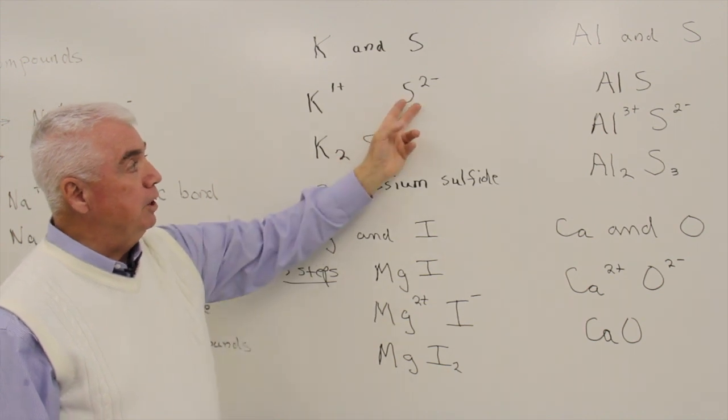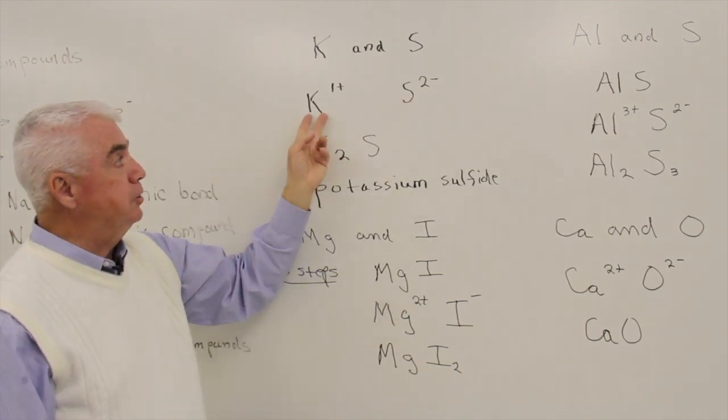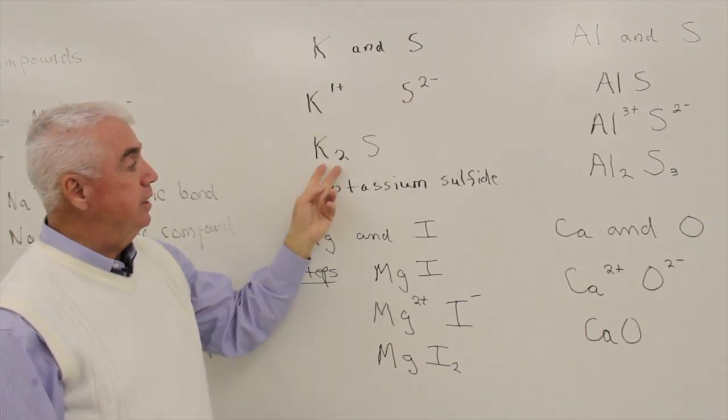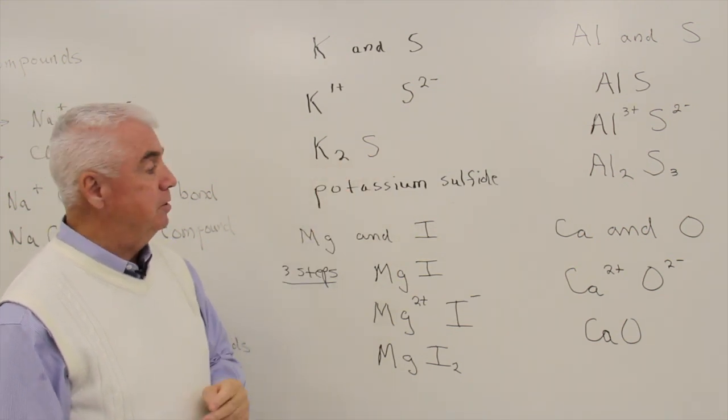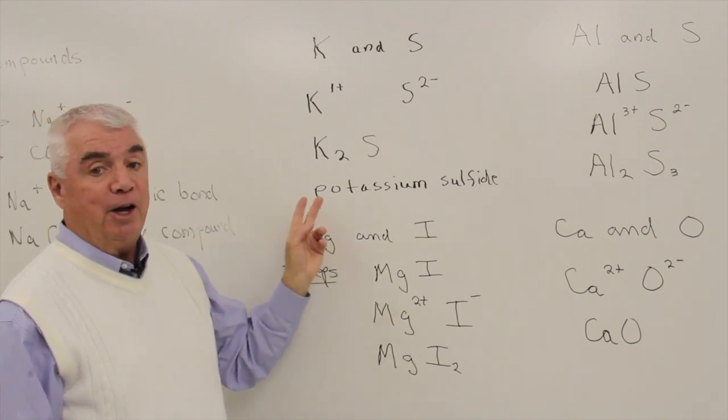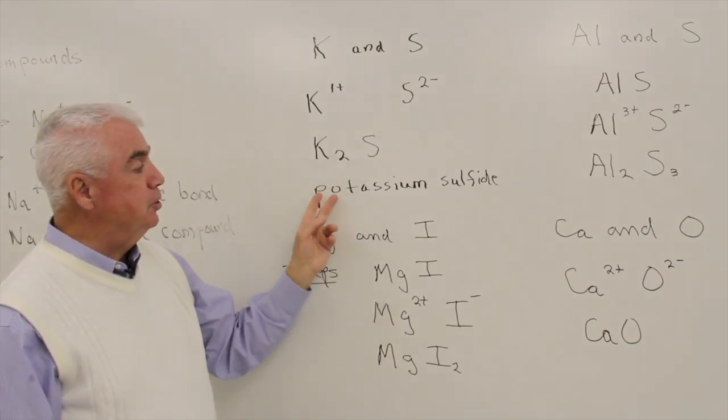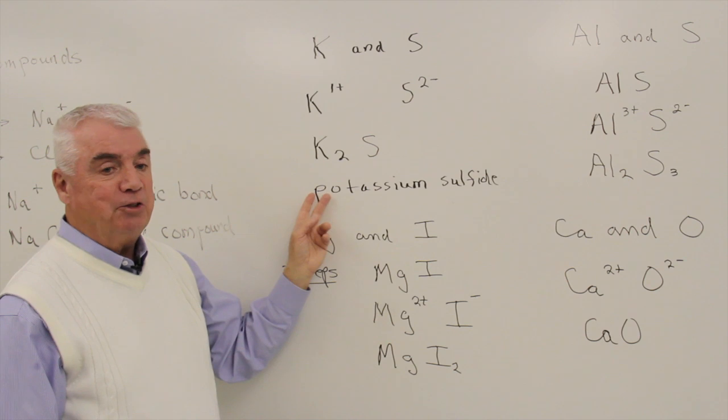So if sulfur would like to, it's going to take two potassiums to give up those two electrons. The formula then is K2S. And the name for the ionic compound, again, just the name of the metal, potassium.